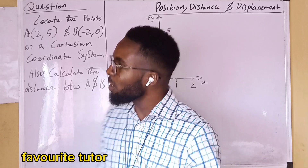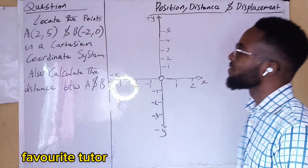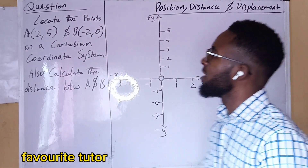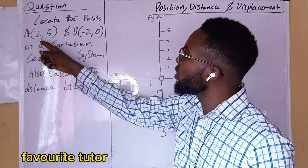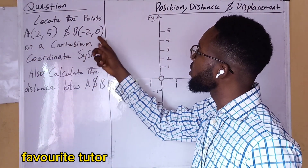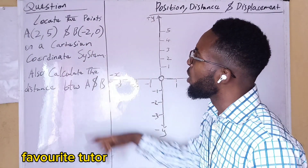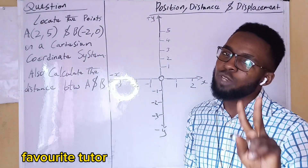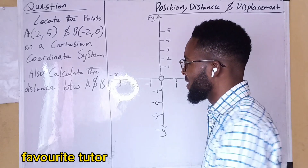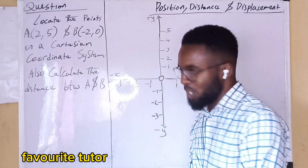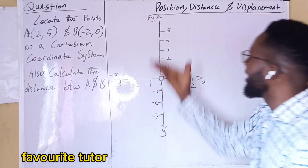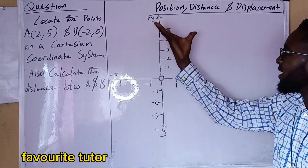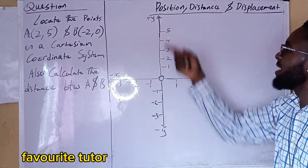I have a question on the board. It says: locate the points A(2, 5) and B(-2, 0) on a Cartesian coordinate system — that is the two-dimensional coordinate system. Also, calculate the distance between them. I have a two-dimensional coordinate system illustration on the board — that is the x and y coordinate system.